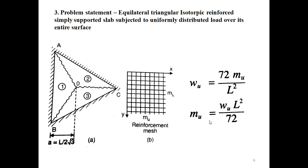The third problem statement is an isotropically reinforced equilateral triangular slab simply supported on all three sides, subjected to uniformly distributed load over its entire surface. You can see the developed yield lines here. Deriving gives wu = 72·mu/L², meaning the ultimate moment mu = wu·L²/72. Please note this value, as examination problems may ask you to find moments or loads using this equation, which you then use to provide reinforcement.